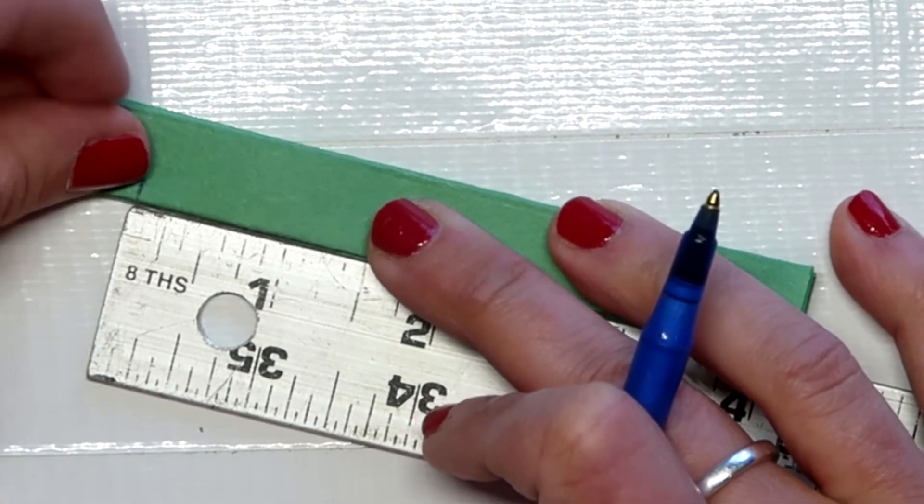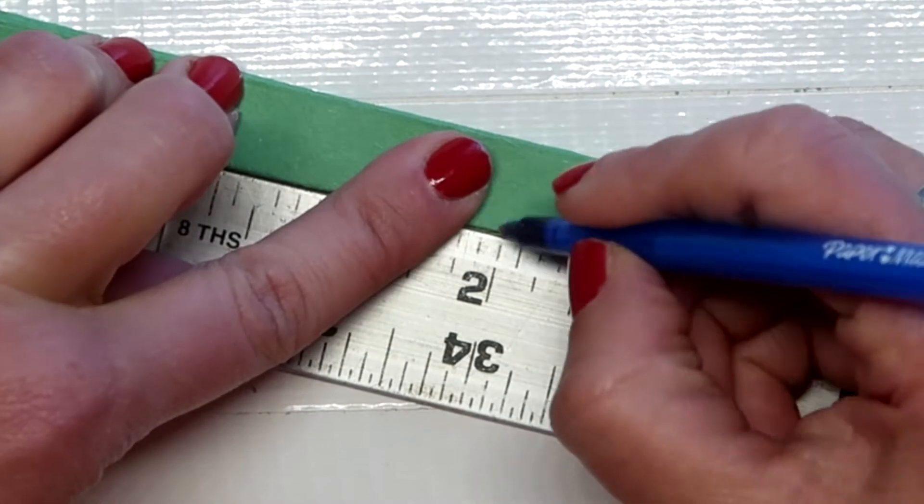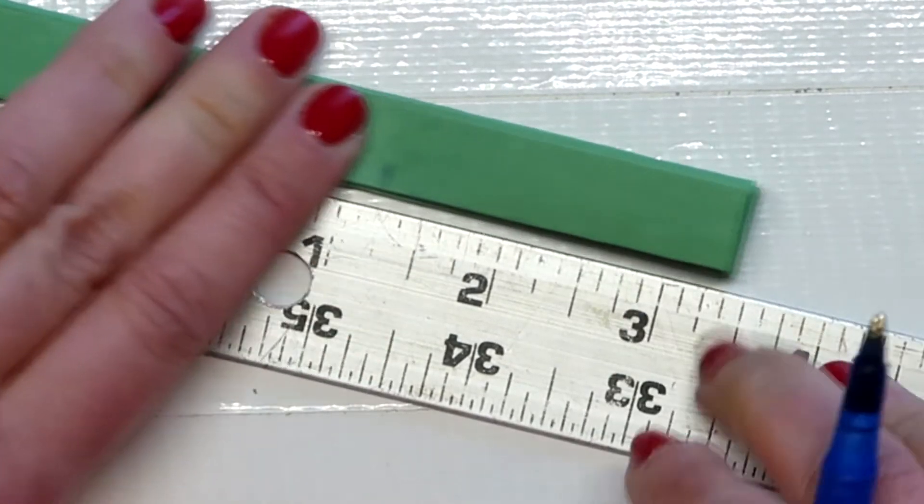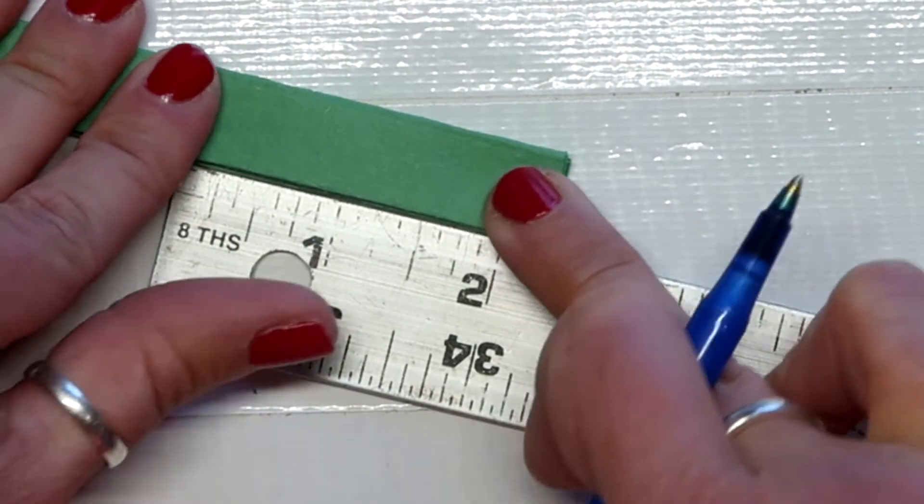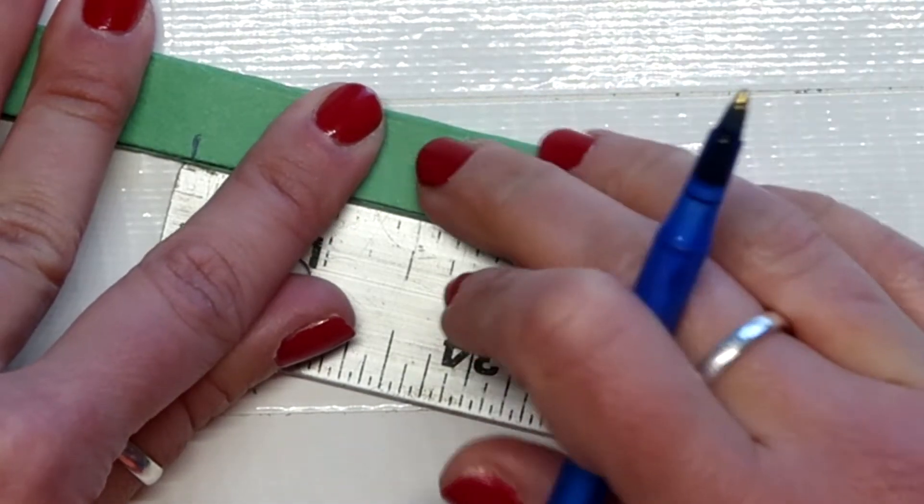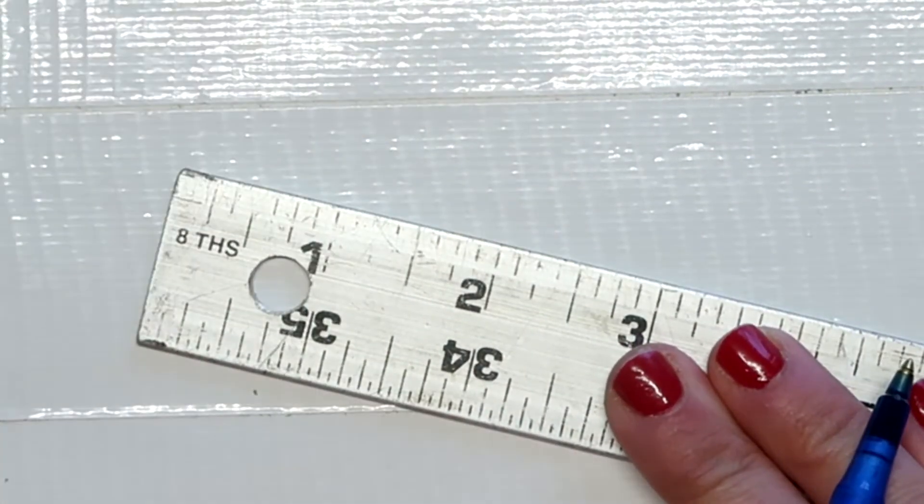The next one is two inches. So here's one, two and we'll mark that one. And then the last one should be about two and a half inches. So it's just a little shy, but that's totally fine. So we'll set that one aside.